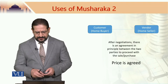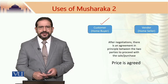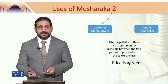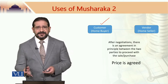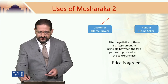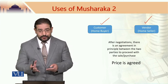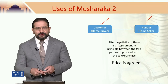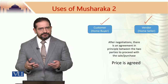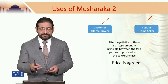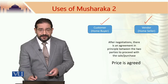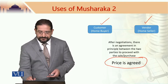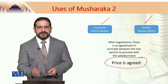Let us use an example. There is a customer looking to buy a house. After searching on Zameen.com, for example, and asking friends and family, this person finds a vendor who has a house to sell. These two — customer and vendor — enter into negotiations on the price and other aspects of payment. The price is agreed between the customer and the vendor before the customer then goes to a bank.